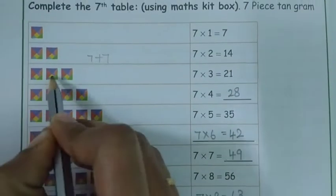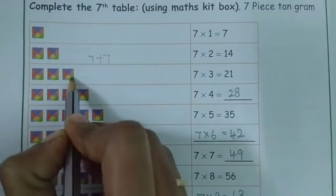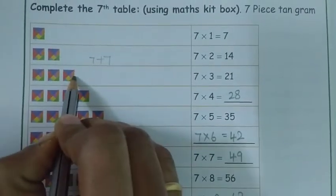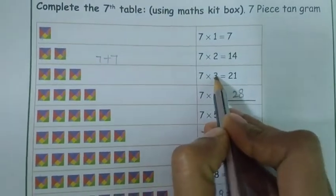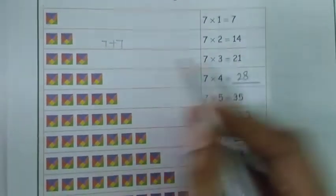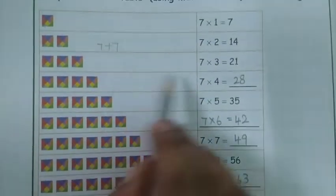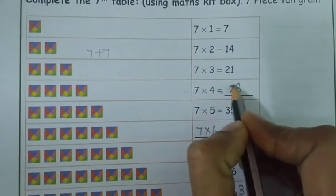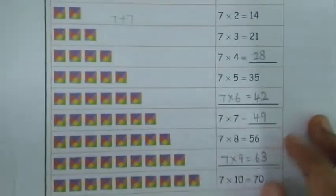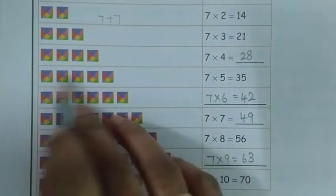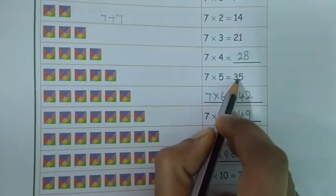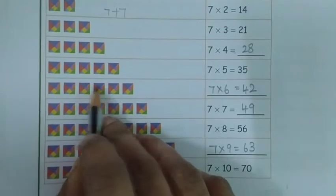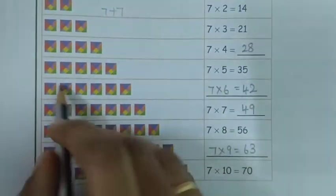Next, here 7, here 7, here 7 — so 7 plus 7 plus 7, three times. So 7 threes are 21. Next, 7 fours are 28. Very good. Next 7 fives are 35. 7 sixes are 42.